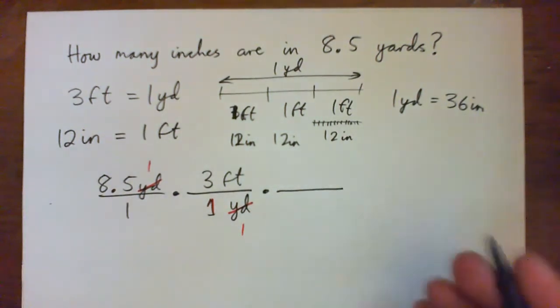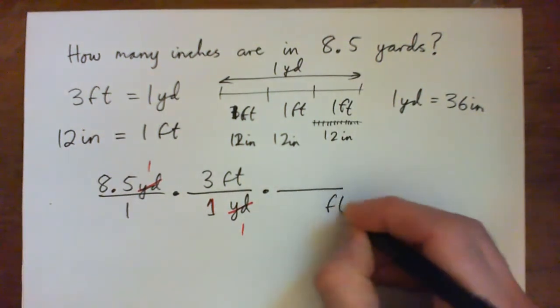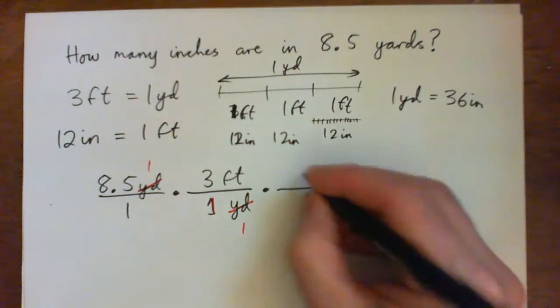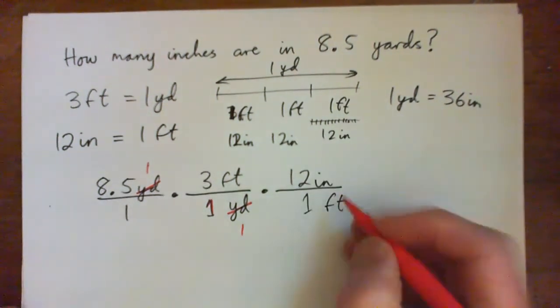But I have to get to inches, right? So I need to multiply it by another one of these unit fractions. I want my feet to cross cancel, and I have one foot equals 12 inches.